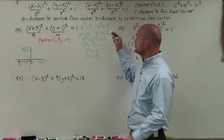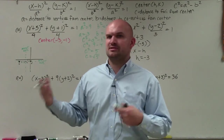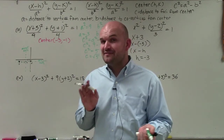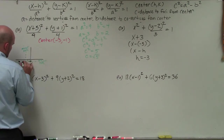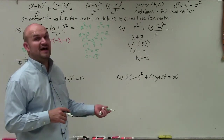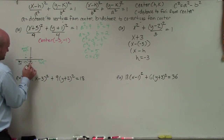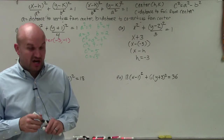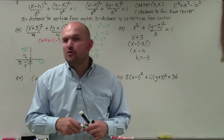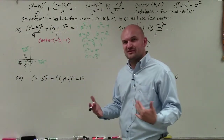Now I'll do my co-vertices, which is a distance of b equal to 2 from the center. For the foci, the distance is the square root of 5. Since 2 squared is 4 and 3 squared is 9, the square root of 5 is somewhere between 2 and 3, so I'll approximate — going about 2-point-something to the right and left of center. From the center, I'll go up 2 and down 2 for the co-vertices, and I'll label those points.